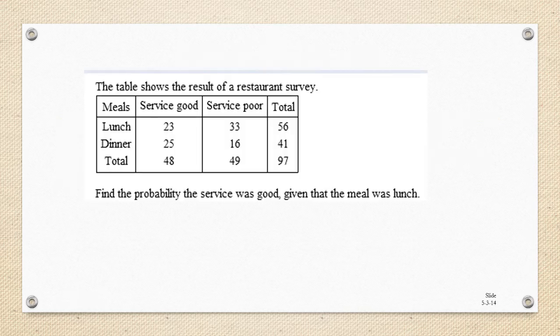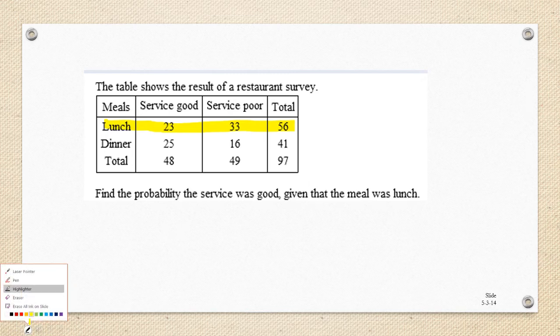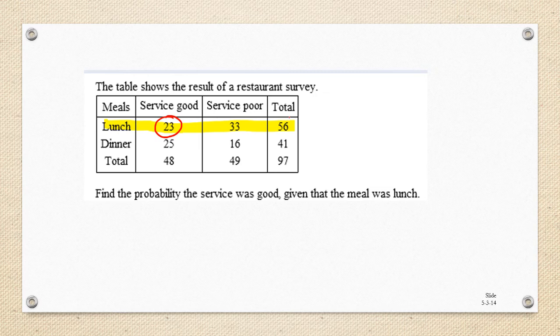To understand what this means, we're going to take a look at a survey from a restaurant at lunch and dinner service as to whether the service was good or poor. We're going to first find the probability that the service was good given that the meal was lunch, so we're restricting ourselves just to the lunchtime service. Out of the lunchtime service, 23 of the respondents said that the service was good, and there were 56 customers altogether that answered the lunchtime poll.